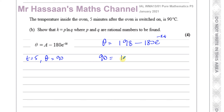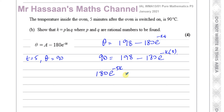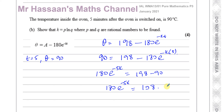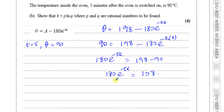We have 90 equals 198 minus 180 E to the power of minus 5K. Rearranging: 180 E to the power of minus 5K equals 198 minus 90, which gives 108. So 180 E to the power of minus 5K equals 108. Dividing both sides by 180, E to the power of minus 5K equals 108 over 180.